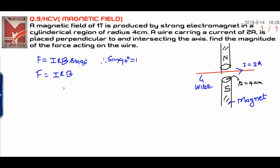The magnetic field is also given here. The magnetic field produced due to these magnets is 1 tesla.